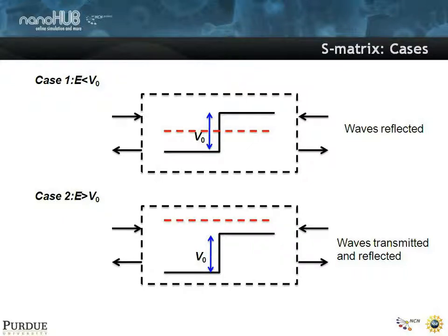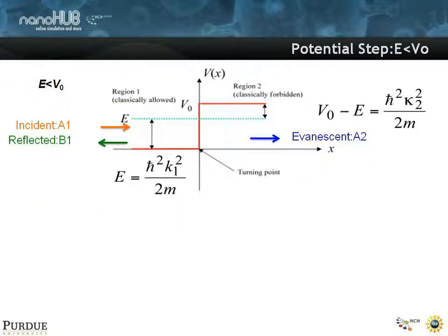Let's look at the first case first. We assume that there's an incident wave A1, a reflected wave B2, and there's an evanescent wave A2, and there's nothing coming from the right. You can define this energy in terms of a propagating momentum K1. You also know that this wave is evanescent on the right-hand side here, and it has a certain decay length Kappa.